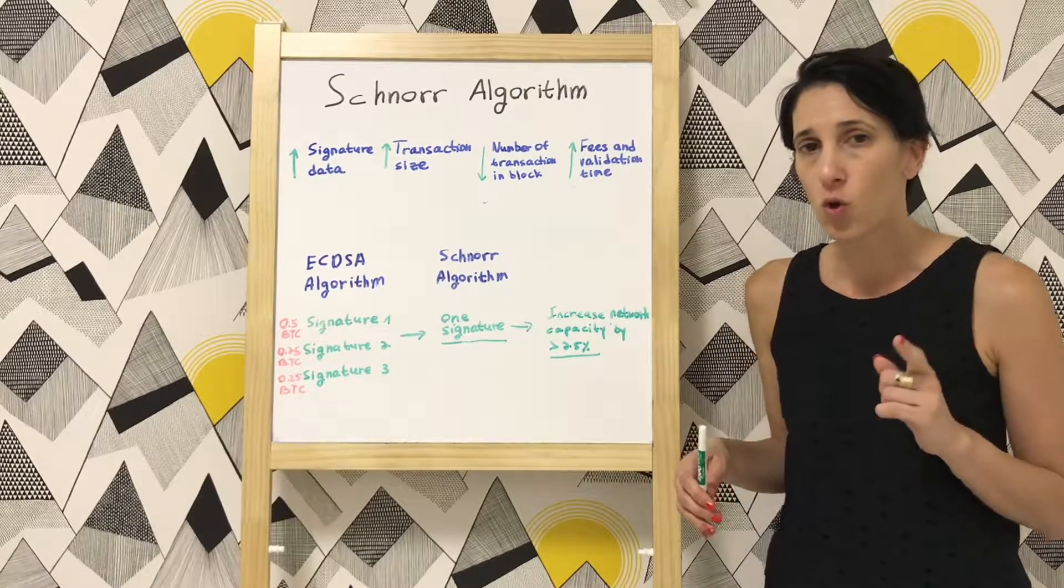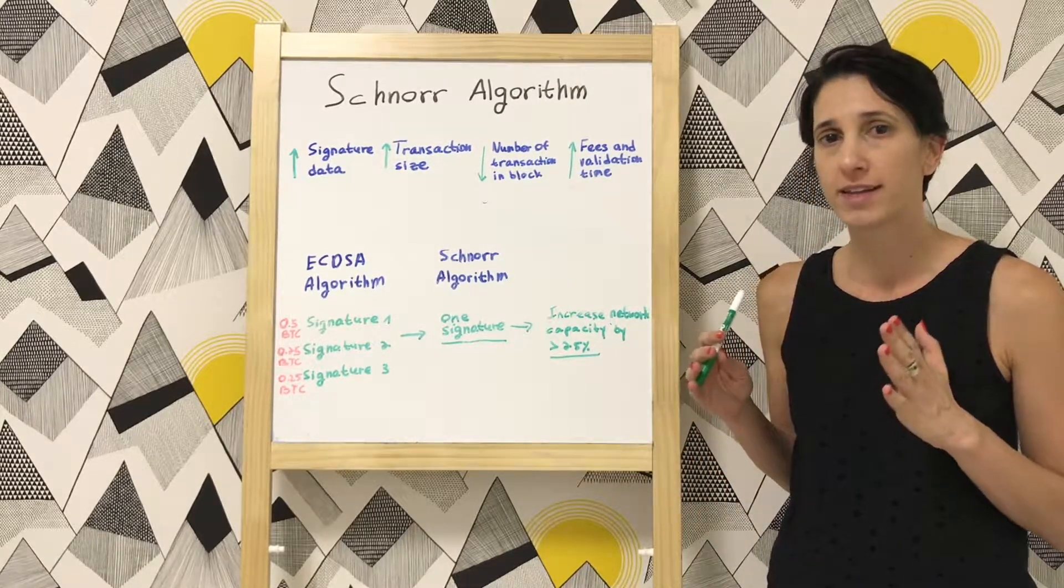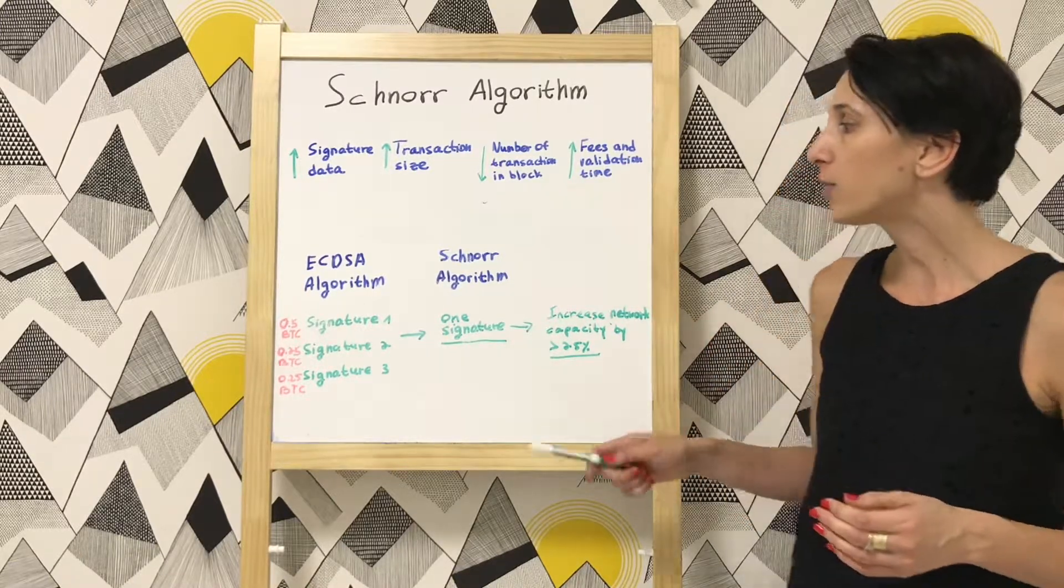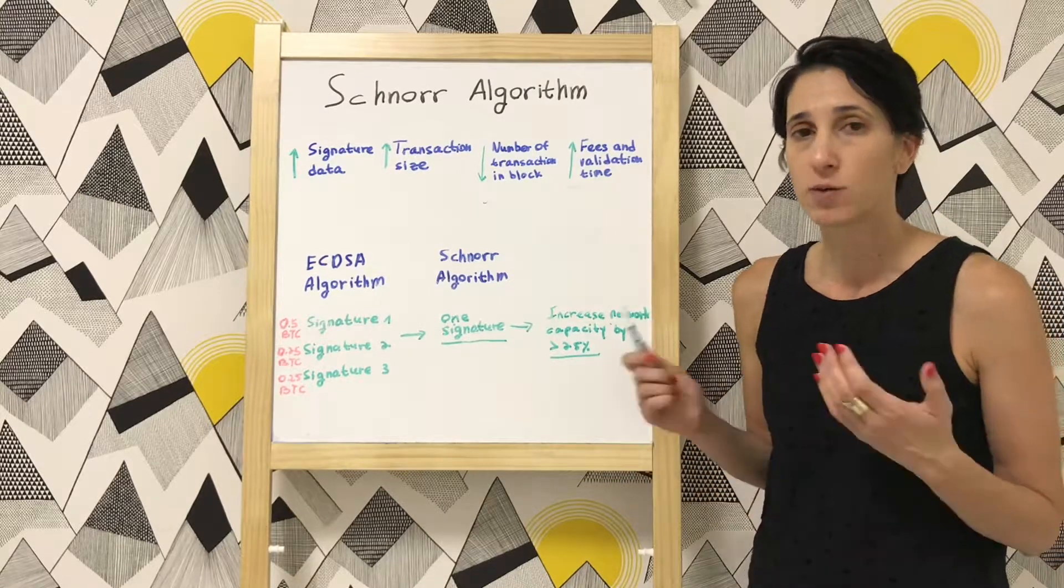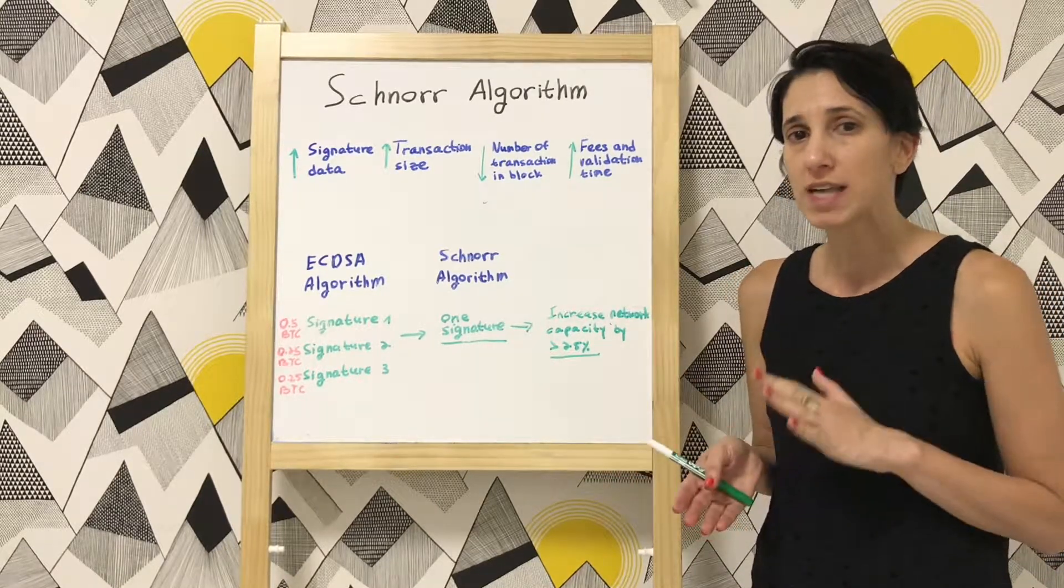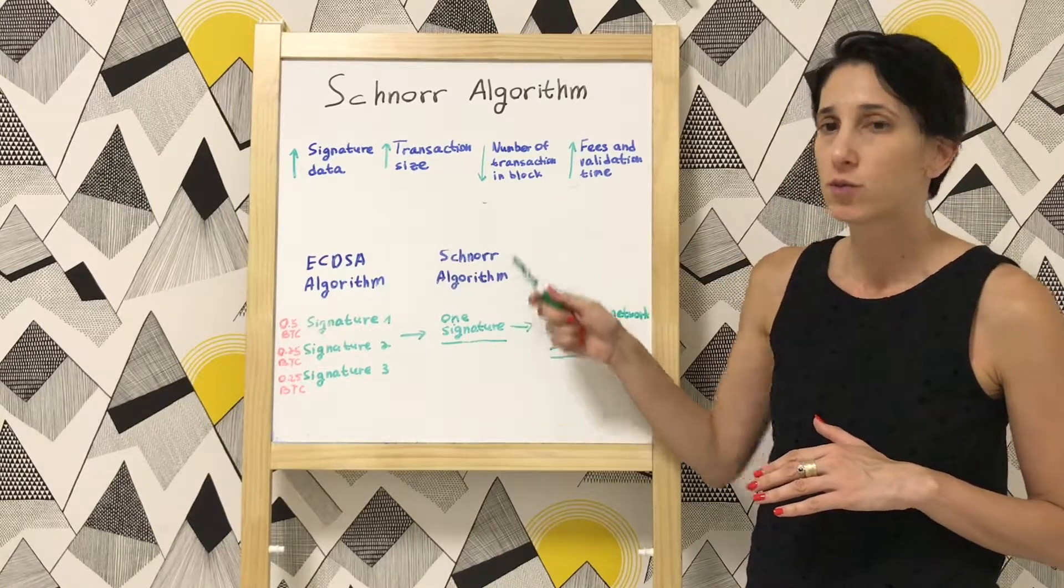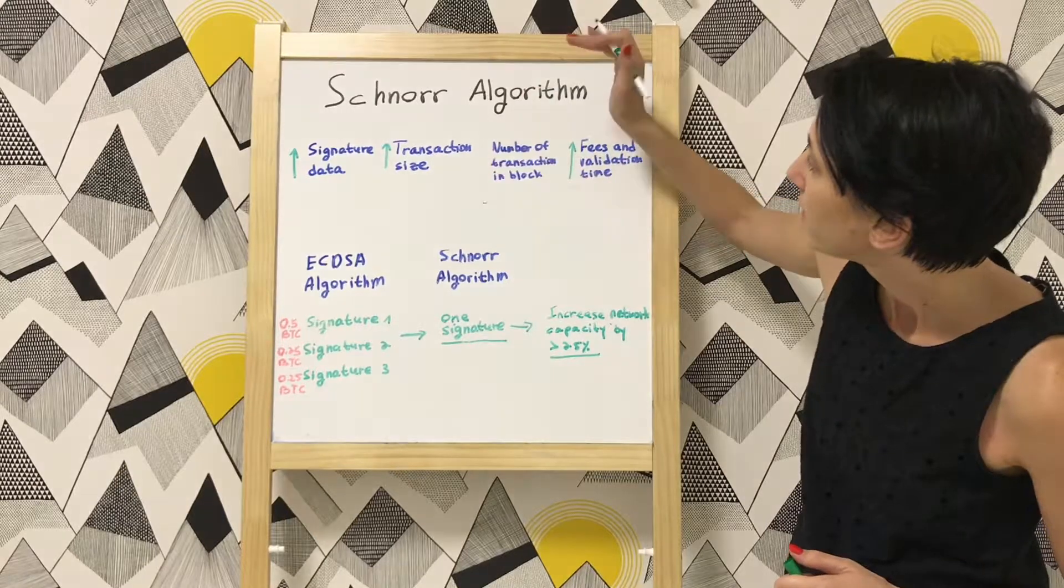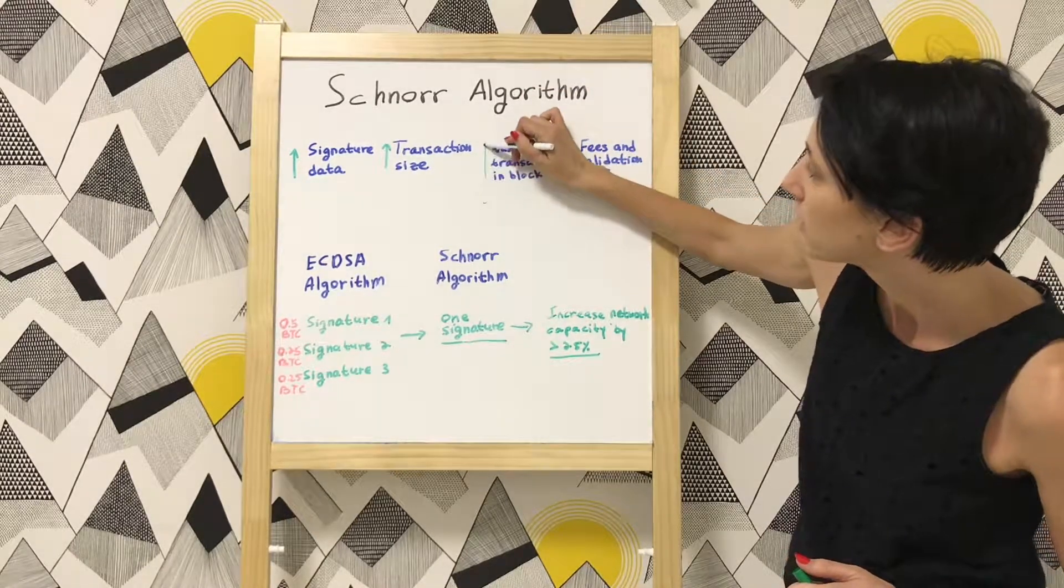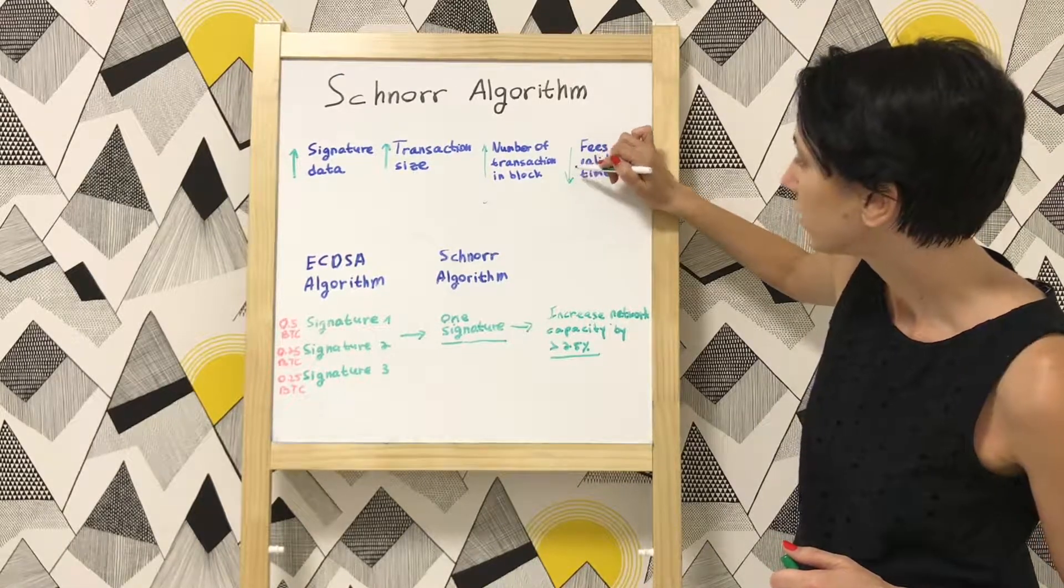But with Schnorr, which is another algorithm for providing digital signature, we are able to aggregate all the signatures into one signature and as a result reduce the size of the signature data, reduce the size of the transaction and increase the number of transactions in each block and reduce the fees and validation time.